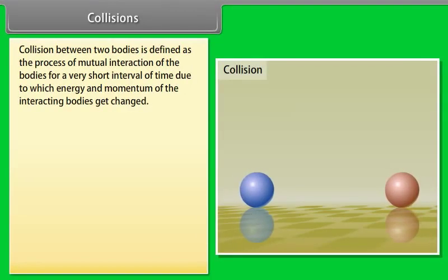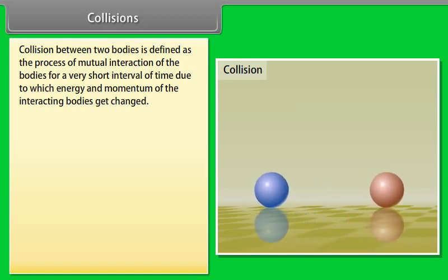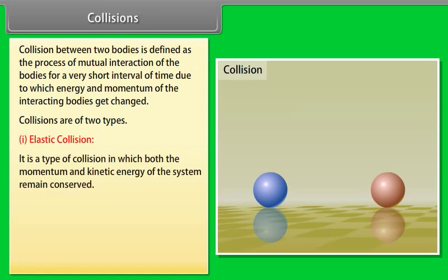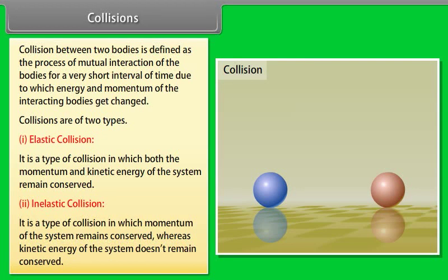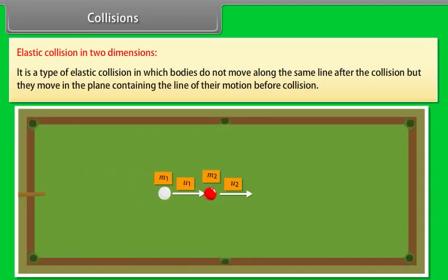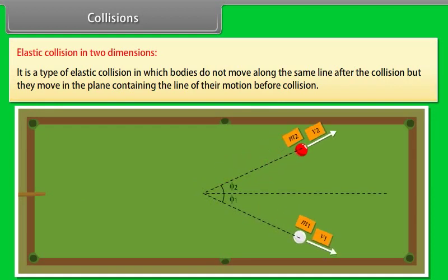Collisions. Collision between two bodies is defined as the process of mutual interaction of the bodies for a very short interval of time due to which energy and momentum of the interacting bodies get changed. Collisions are of two types: number one, elastic collision. It is a type of collision in which both the momentum and kinetic energy of the system remains conserved. Number two, inelastic collision. It is a type of collision in which momentum of the system remains conserved, whereas kinetic energy of the system doesn't remain conserved. Elastic collision in one dimension: it is an elastic collision of two bodies such that they move along the same straight line before and after the collision. Elastic collision in two dimension: it is a type of elastic collision in which bodies do not move along the same line after the collision, but they move in the plane containing the line of their motion before collision.